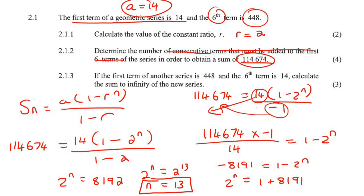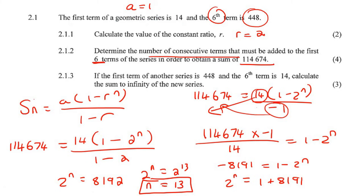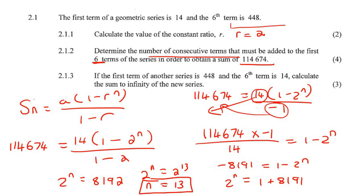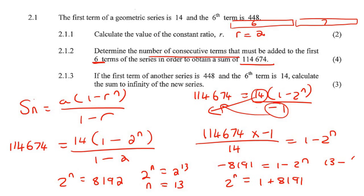That tells us there are 13 terms altogether to reach that sum. The question asks how many terms must be added to the first 6 terms, so we just do 13 minus 6, which gives 7 extra terms.